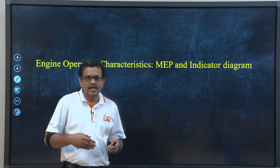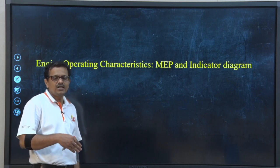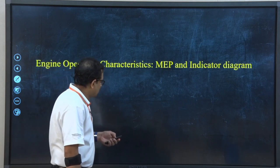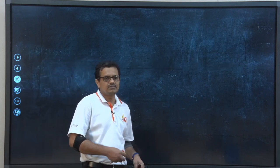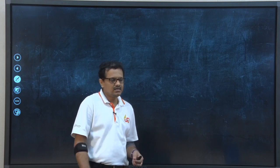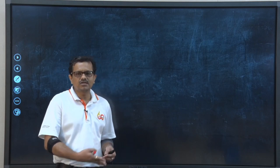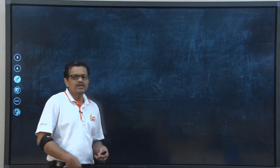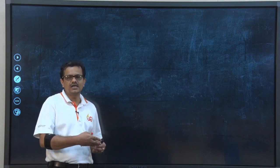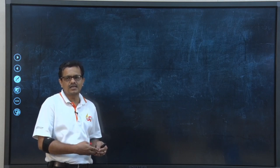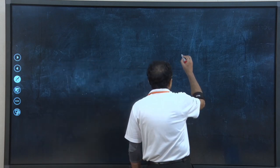To analyze the engine operating characteristics, particularly focusing on the mean effective pressure, we need to draw the schematic of a four-stroke engine. We shall discuss everything in the context of a four-stroke engine, but the expressions we shall derive in today's class can also be written for two-stroke engines.